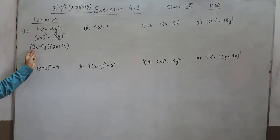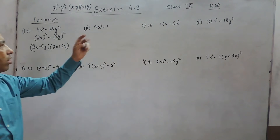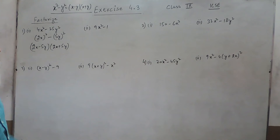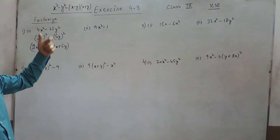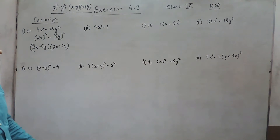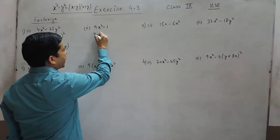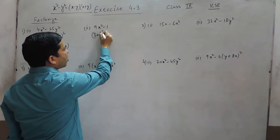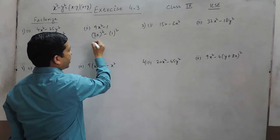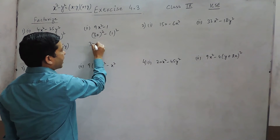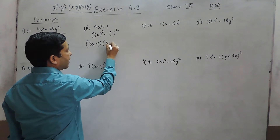In the same way all the questions in this exercise can be solved which have two terms that are both perfect squares. Here we can write it as 3x whole square minus 1 square, which can be written as 3x minus 1 and 3x plus 1.